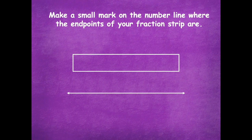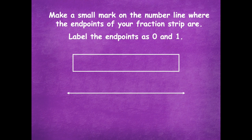You should have your fraction strip and your number line. We're going to make a small mark on the number line where the endpoints of your fraction strip are — go to the very start and the very end of the fraction strip and draw a line. Label them as 0 and 1. The start of my fraction strip is where the 0 goes, and the end is where 1 whole goes. Pause the video, mark those endpoints, label them 0 and 1, then click play.